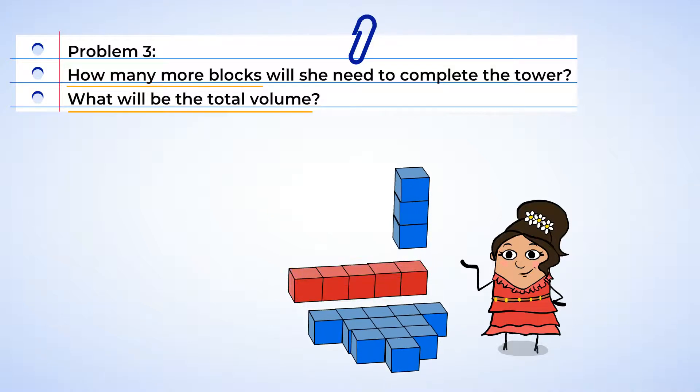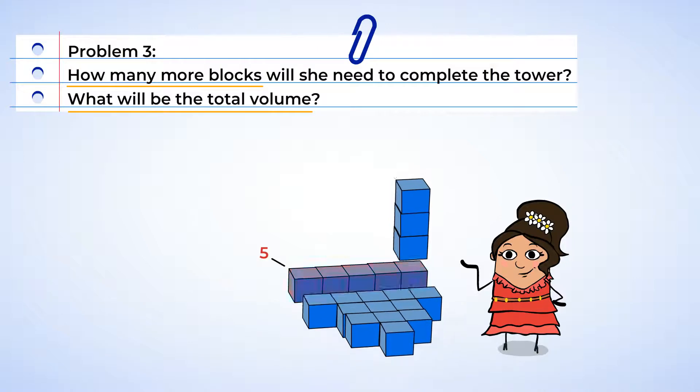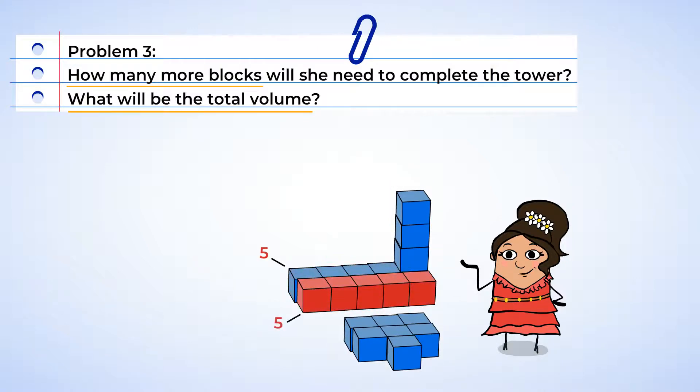So starting at the back, I see a row of five. The second row also has five, and that gives us a total of 10. And we then have two rows of three. So 10 plus six is 16. Plus the final block is 17.